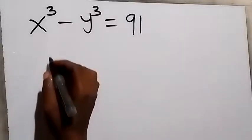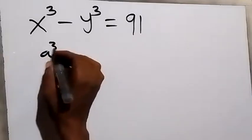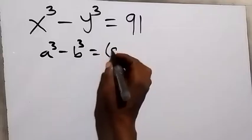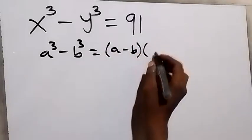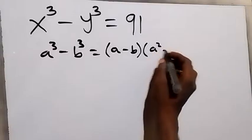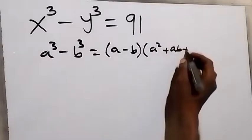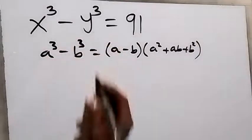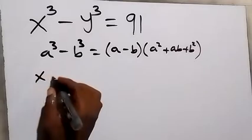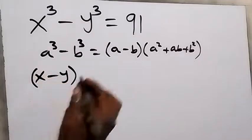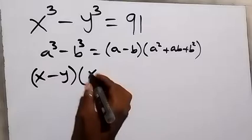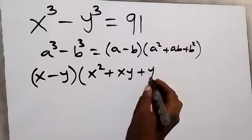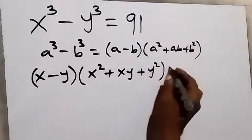From here, let's look at this identity: a raised to the power 3 minus b raised to the power 3 equals a minus b, multiplied by a squared plus ab plus b squared. When we apply this identity on the left hand side, this becomes x minus y, multiplied by x squared plus xy plus y squared, equals 91.